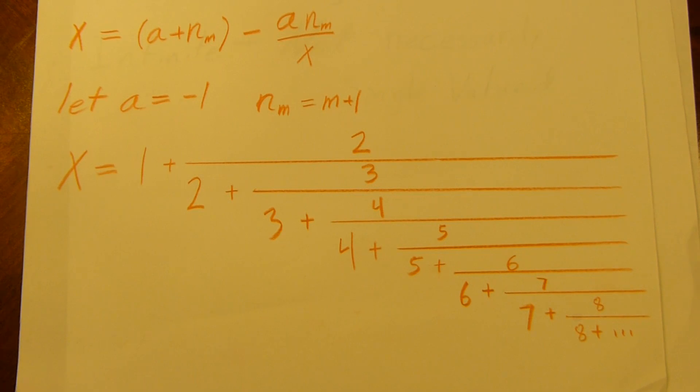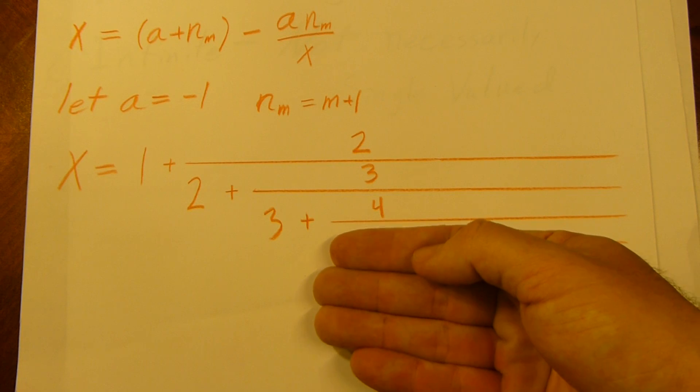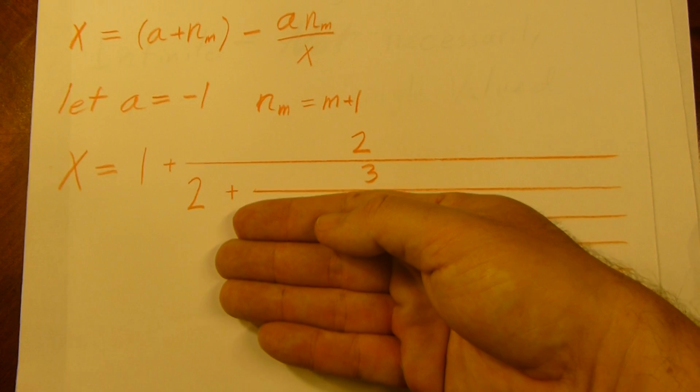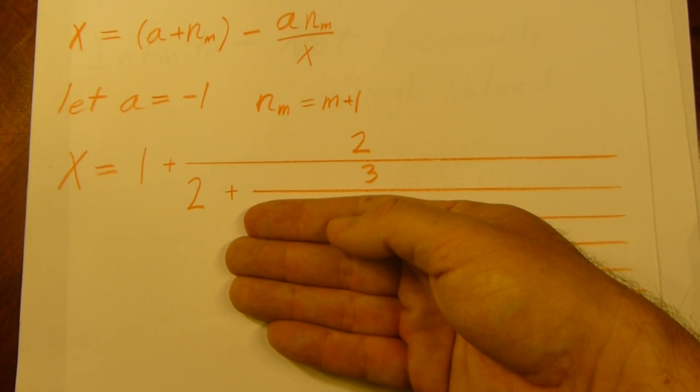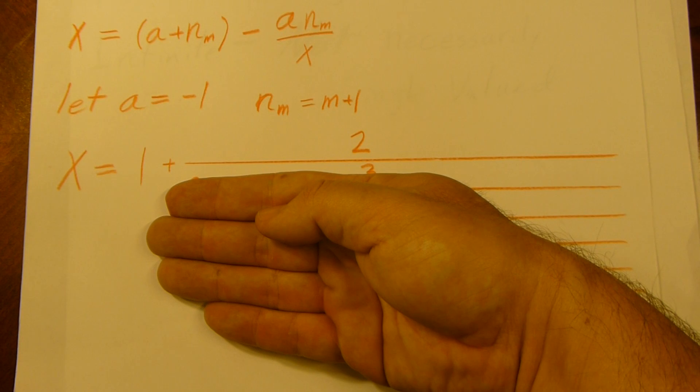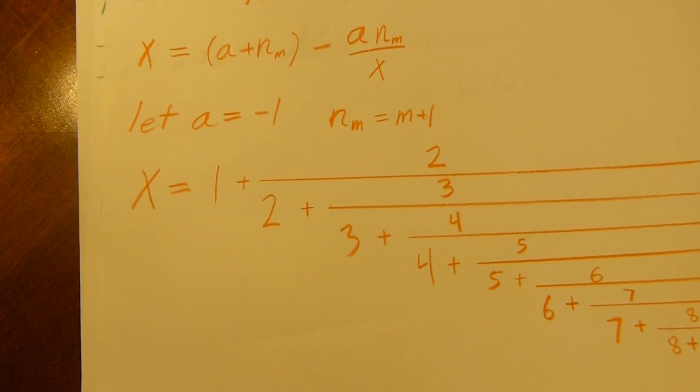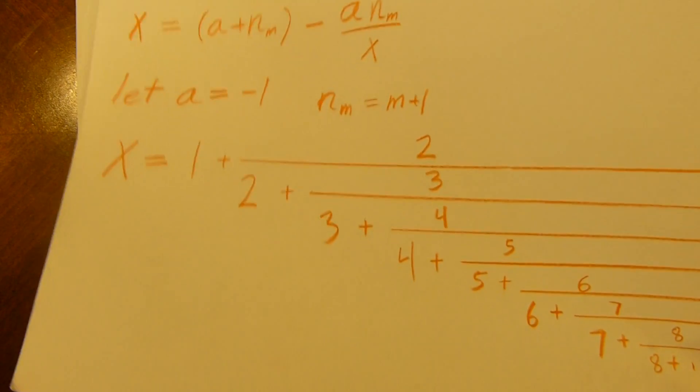But we can put negative 1 in. If we put negative 1 in here, 4 over negative 1 gives us negative 4. 3 minus negative 4 is minus 1. So 3 over minus 1 is negative 3. 2 minus 3 is negative 1. 2 over negative 1 is negative 2. 1 minus 2 is minus 1. Negative 1 is a solution, even though it does not converge to it.